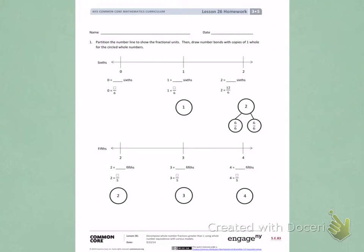Number 1. Partition the number line to show the fractional units. Then, draw number bonds with copies of one whole for the circled whole numbers. The first number line I see tells me to partition into sixths. So I'm going to partition into thirds and then break each of those thirds in half to make sixths. Then I'm going to do the same thing between 1 and 2.